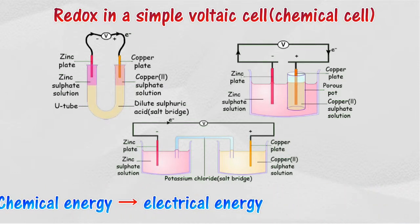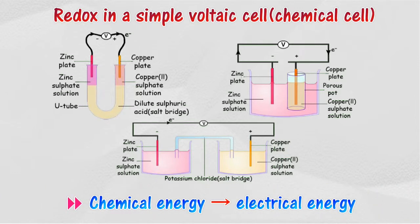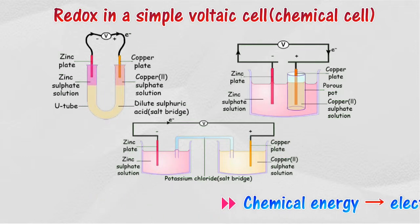In this simple voltaic cell, the transfer of electrons occurs from the reducing agent to the oxidizing agent via an external wire. The voltmeter can be used to measure the electrical energy that is produced. The energy conversion that occurs in a simple voltaic cell is chemical energy to electrical energy.